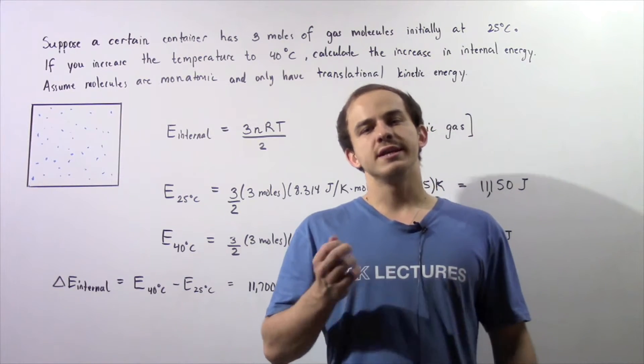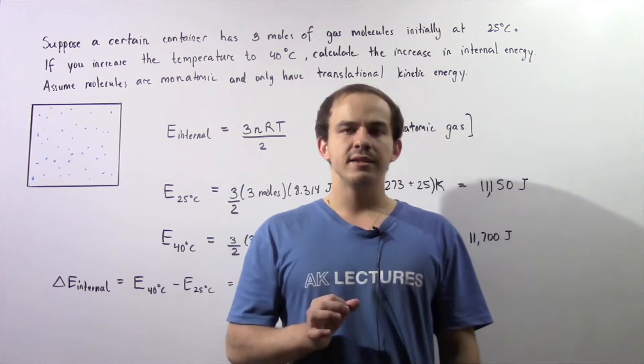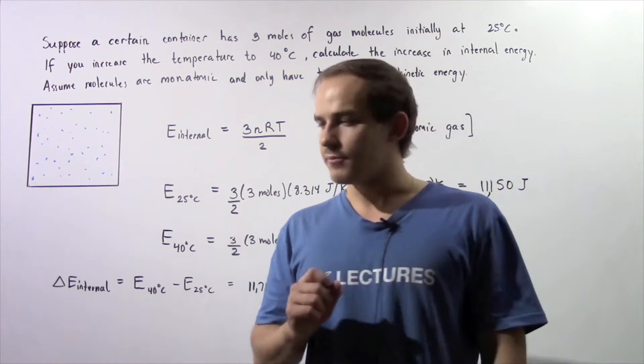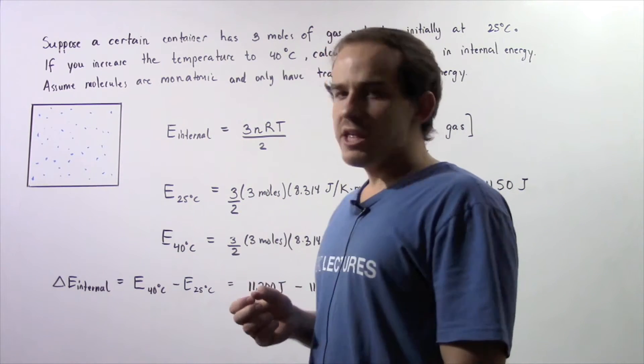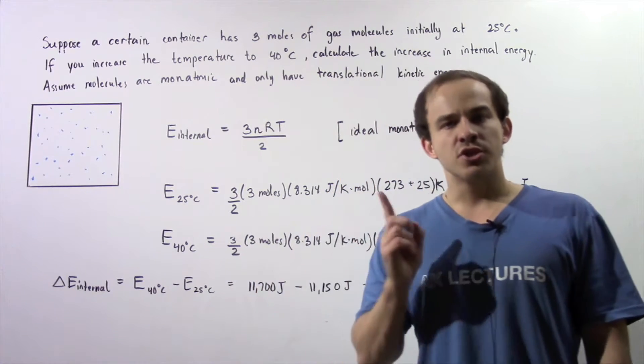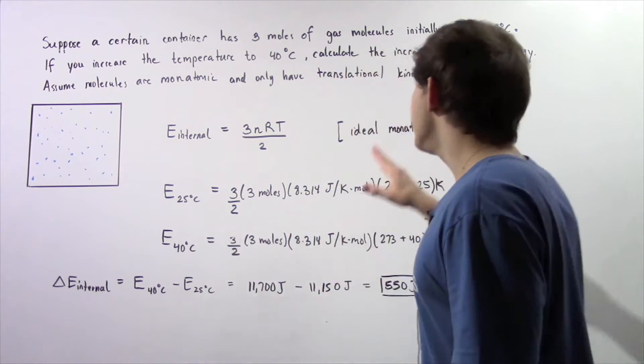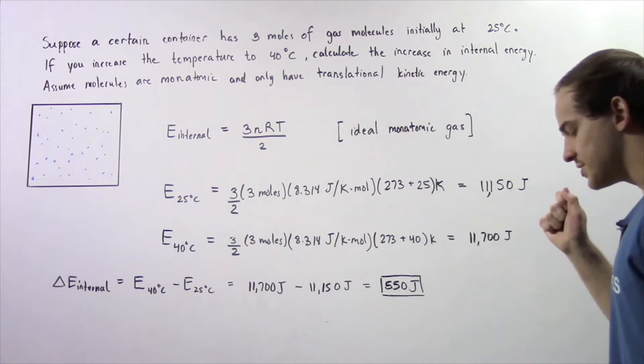Let us look at the following example in which we're going to calculate the internal energy of our gaseous system. Suppose that a certain container has three moles of gas molecules that are initially at 25 degrees Celsius.